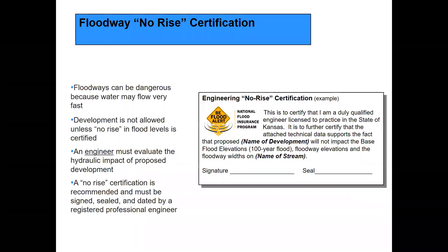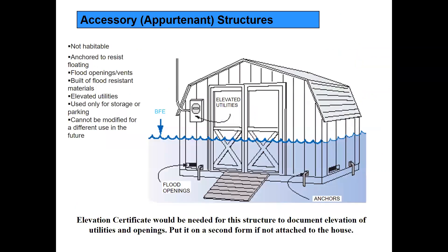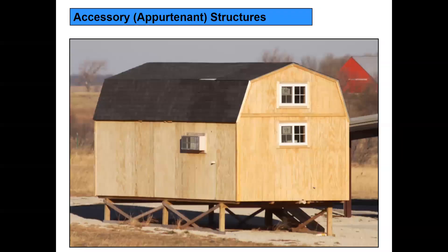Buildings can be elevated on fill or crawl spaces. The difference is when a crawl space is in the water, it's part of the building's foundation and the building will always be considered in the floodplain. If you elevate on fill, the fill is not part of the foundation, so they could apply for a letter of map revision. Here's a shed — you'd need an elevation certificate to verify the electrical box is above the base flood elevation as required by your regulations. If the shed had no electrical box, you could probably get by without one.